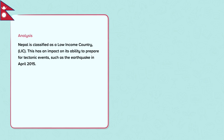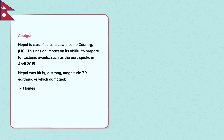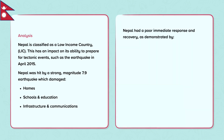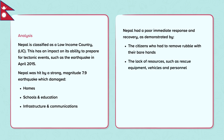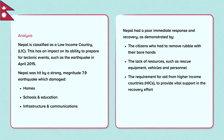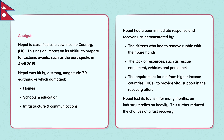Nepal is identified as a low-income country, or LIC. This has an impact on its ability to prepare for tectonic events such as the earthquake in April 2015. Nepal was hit by a strong magnitude 7.9 earthquake which damaged homes — an estimated 3 million people were made homeless — schools, affecting around 1 million children's education, and infrastructure and communications. Roads were blocked due to landslides, which had a secondary effect of preventing the access of aid, food and rescue equipment. Nepal had a poor immediate response and recovery, as demonstrated by citizens having to remove rubble with their bare hands, a lack of resources such as rescue equipment, vehicles and personnel, and the requirement for aid from higher income countries to provide vital support. Nepal also lost its tourism for many months, an industry it relies on heavily, which further reduced the chances of a fast recovery.